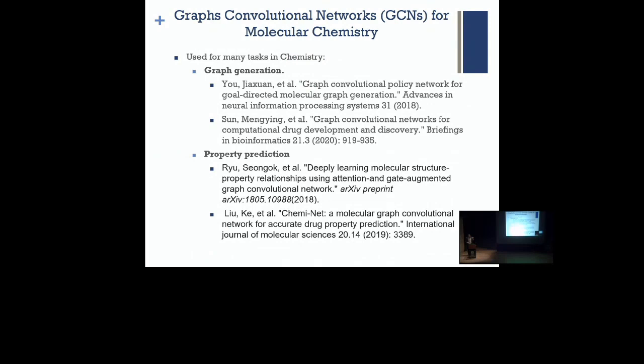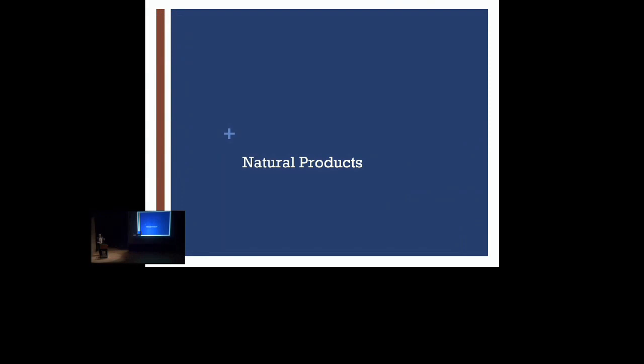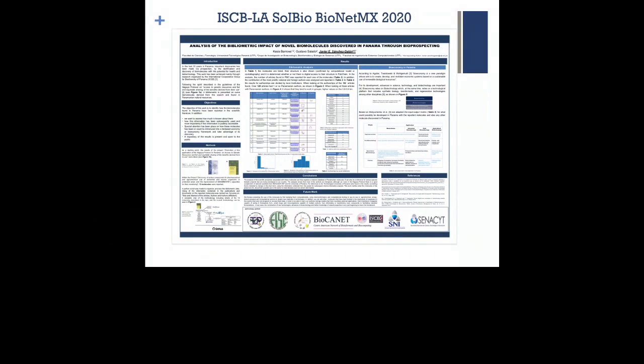In terms of molecular chemistry, there are a few examples that have been working for graph generation and property prediction. But what's next? It's natural products. For me, this is essentially the first time — the first time I worked with natural products was when I presented a poster with Kessia Barrows, who is now in my lab pursuing a doctorate degree. We were looking at specific molecules captured in Panama through bioprospection and seeing how they entered the biotechnological sector.